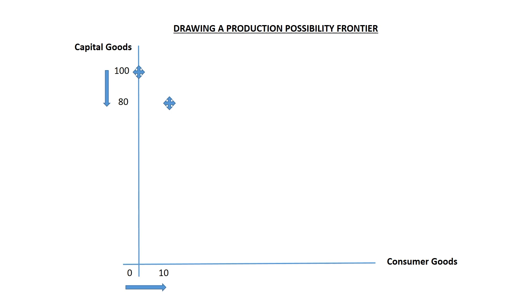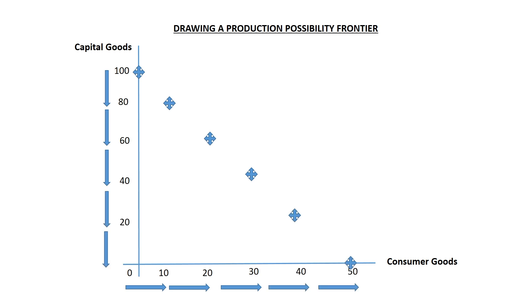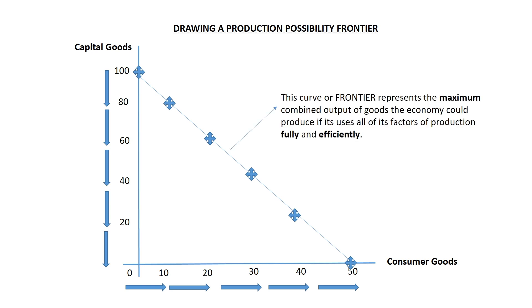And I can continue this way. To produce 10 more consumer goods, I'd have to sacrifice 20 more capital goods. And again, to produce 10 more consumer goods, the opportunity cost would be missing out on 20 more capital goods. And what I will end up with is a production possibility frontier. This curve or frontier represents the maximum combined output of goods that an economy could produce if it uses all of its land, labour, capital and enterprise fully and efficiently.